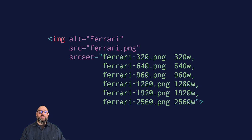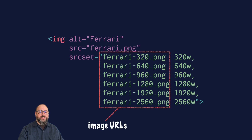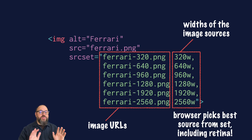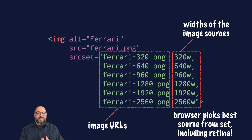The srcset attribute provides the browser with a set of sources to choose from and what size each of those sources is. It's a comma-separated list of URLs paired with widths. By providing a collection of image assets this way, you're saying to the browser: I'm giving you a list of images, and I trust you to pick the best one. The browser will choose the best image based on a complex set of criteria, including what size the image is displayed at their current viewport size, and whether the user has a high-resolution display or not.